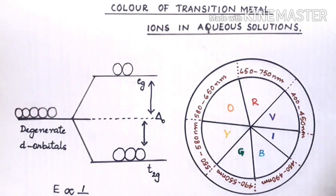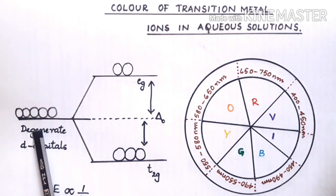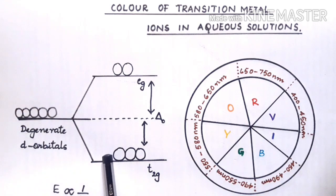Now the main reason for showing color is due to d-d transitions that are occurring. Now this happens in the presence of a ligand. Depending upon the strength of the ligand, one can decide what type of splitting will occur.